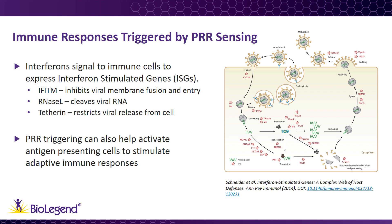All three types of interferons activate the expression of genes called interferon-stimulated genes, or ISGs. Hundreds of ISGs have been discovered and many of them produce proteins that directly antagonize viral replication by inhibiting various steps of the virus life cycle, from virus entry to genome replication and viral release. These steps are displayed in the figure on the right, and the proteins in red text are ISGs that inhibit the designated replication steps. As you can see, the majority of the steps in a virus's life cycle have an associated ISG that has evolved to restrict the activity of the virus at a specific stage.